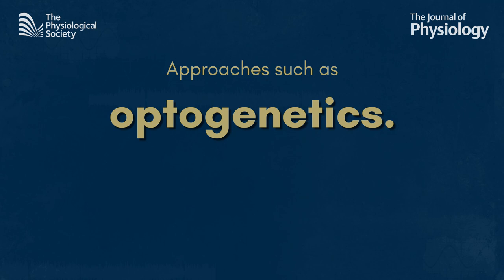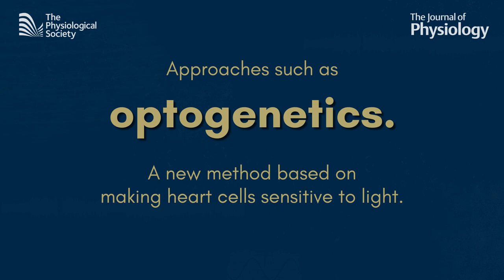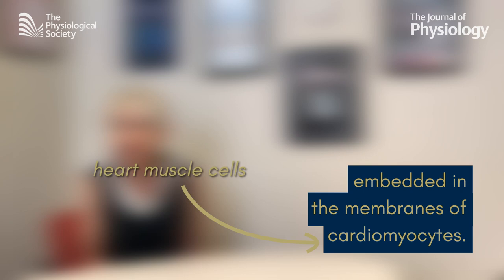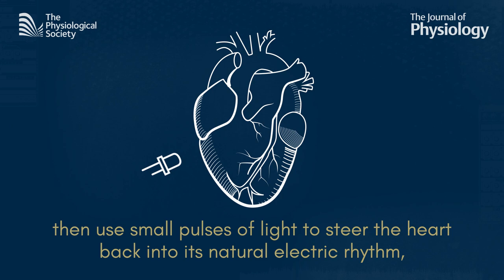Optogenetics is a new method based on making heart cells sensitive to light. In other words, proteins that are light-sensitive are embedded in the membranes of cardiac myocytes — that's the heart's muscle cells — making them respond electrically to light illumination. The idea is to use small pulses of light to steer the heart back to its natural electric rhythm, instead of the high-impact shocks we currently use.